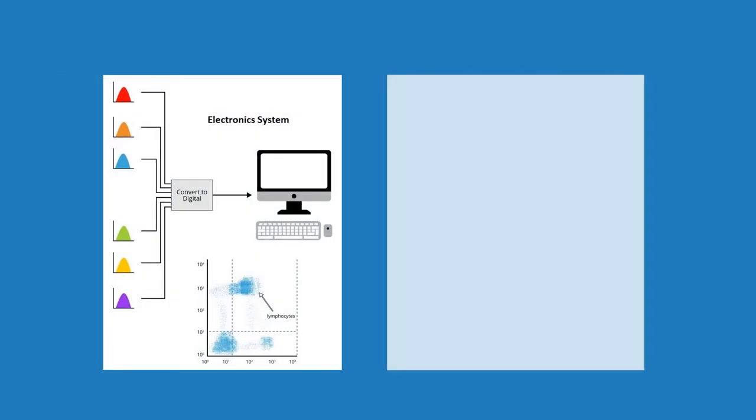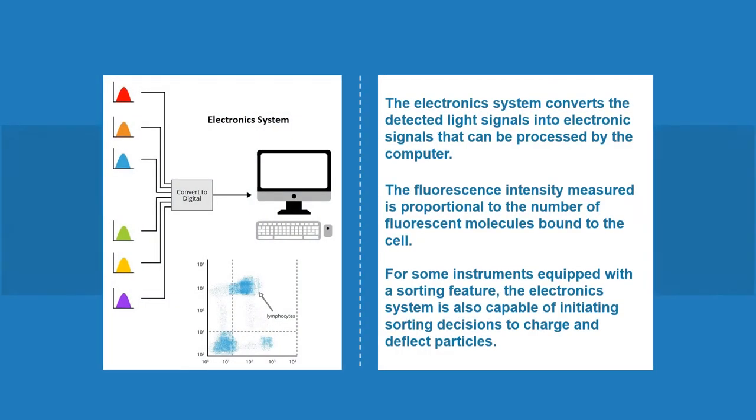The electronics system converts detected light signals into electronic signals that can be processed by the computer. For instruments equipped with a sorting feature, the electronics system is also capable of initiating sorting decisions to charge and deflect particles.